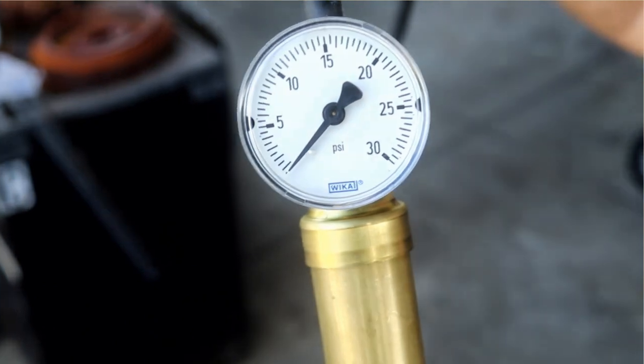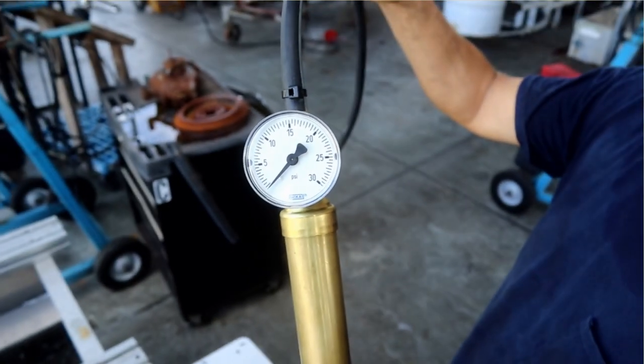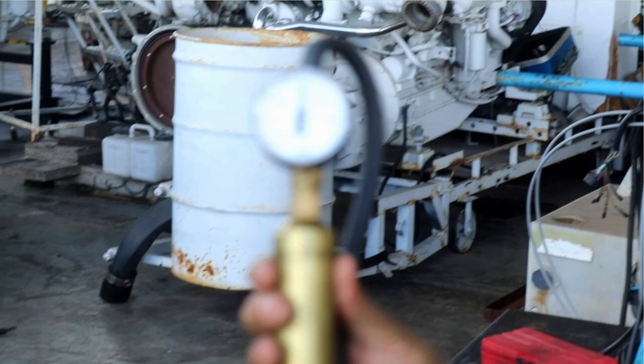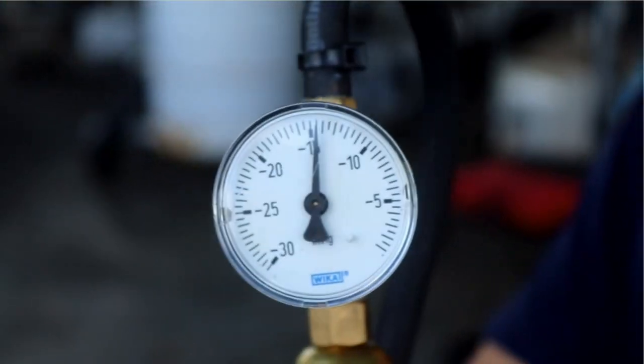For the pressure test, the gauge is calibrated in positive pressure. For the vacuum test, it's in negative pressure, negative values. Because it's suction.